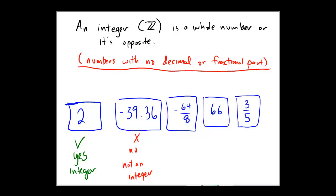Now the next number might be considered kind of a trick question here. Negative 64 over 8 looks like a fraction, doesn't it? But what is negative 64 divided by 8? Notice that you can divide 64 by 8 and divide 8 by 8 to yield negative 8 over 1, or simply negative 8.